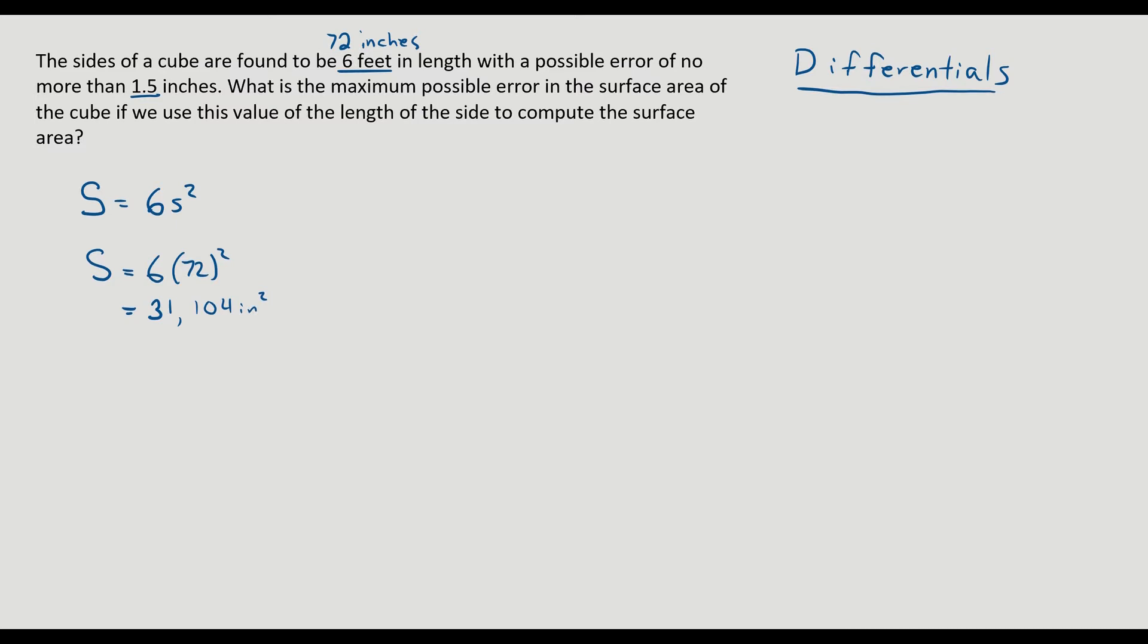So that's the ideal surface area. But it says the sides can vary by 1.5 inches. So they can be as big as 73.5 or as small as 70.5. And what is the maximum possible error? What's the biggest the surface area can be within that range for the side length? Well the biggest would be if I go to 73.5 squared and have that be my surface area. So I have 73.5 squared and that gives me 32,413.5 inches squared. So the maximum error in the volume is then I subtract those two to get 1,309.5 inches squared.